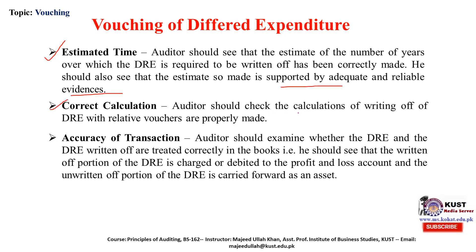The auditor should check the calculations of writing off deferred revenue expenditure and verify that vouchers are properly made. The auditor should examine whether deferred revenue expenditure is treated correctly in the books — that the written-off portion is debited to the profit and loss account and the unwritten-off portion is carried forward.